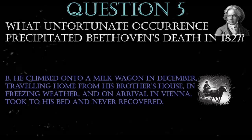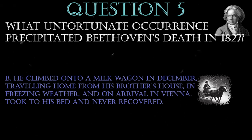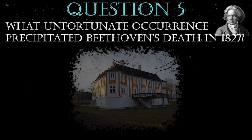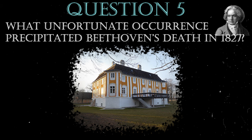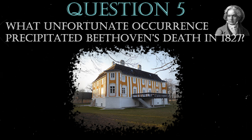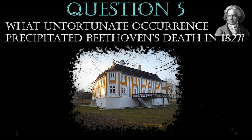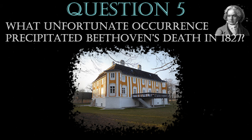In 1826, Beethoven went to stay with his wealthy brother who owned a rather beautiful castle in Gneixendorf, which you can see in the picture. While he was there, he composed his final work, which turned out to be the substitute finale to his string quartet opus 130. He wrote it to replace the original finale, the Grosse Fuge, which he took out and published separately.